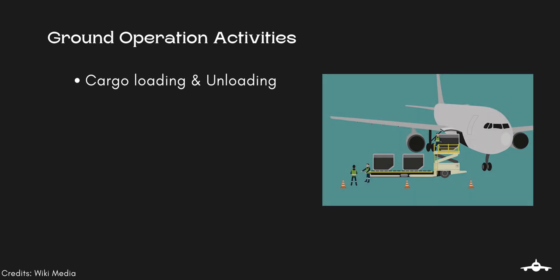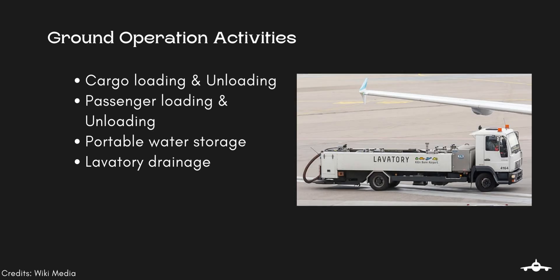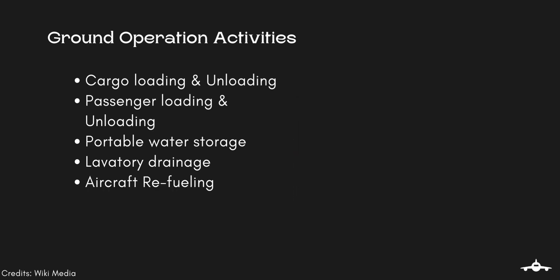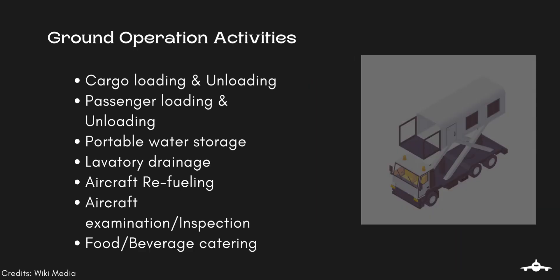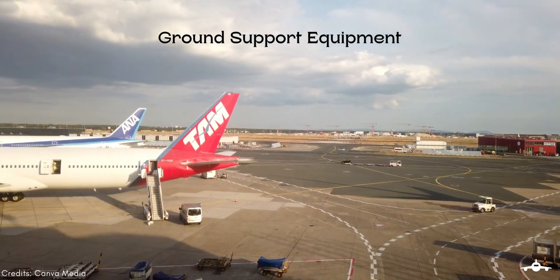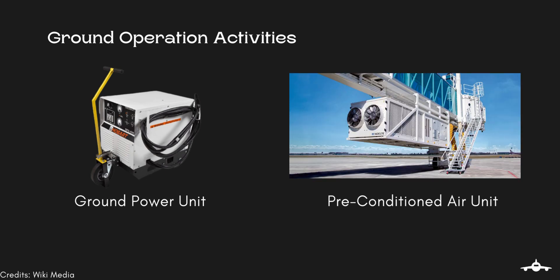These activities are undertaken during a typical aircraft gate period, including cargo loading and unloading, passenger loading and unloading, portable water storage, lavatory waste drainage, aircraft refueling, engine and fuselage examination, maintenance, and food and beverage catering. Airlines employ specially designed ground support equipment to support all these operations. Moreover, electrical power and conditioned air are generally required throughout gate operational periods for both passenger and crew comfort and safety, and many times these services are also provided by ground support equipment.